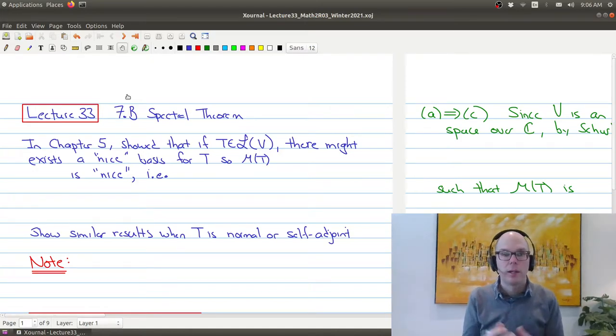We're getting into some more complex stuff, so I'll hopefully go as slow as possible and tell you what the main ideas are. I want to recall back in Chapter 5, when we looked at operators, we showed that in some cases there might be nice bases for the operator, so that the matrix associated to the operator is nice.